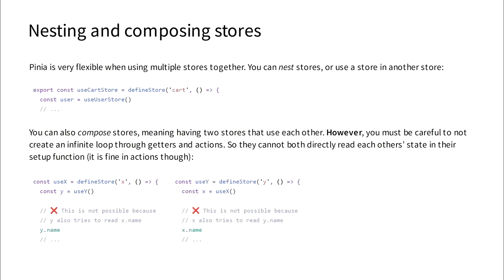Now, say that you have a large amount of data that you need to organize — this may be a little difficult. So basically what you have to do is nest stores, which means having a store as a state attribute of another store. And another thing that you can do is compose stores.